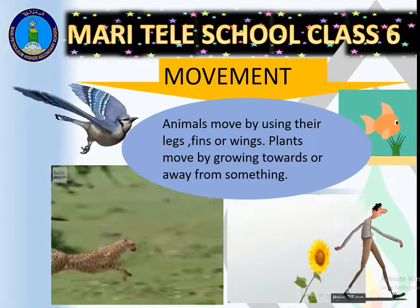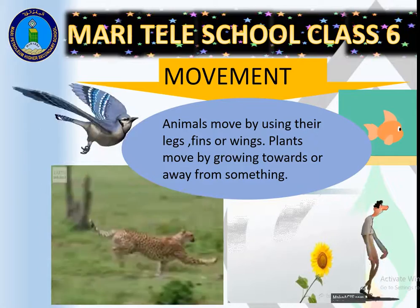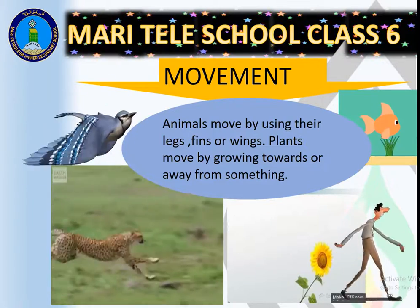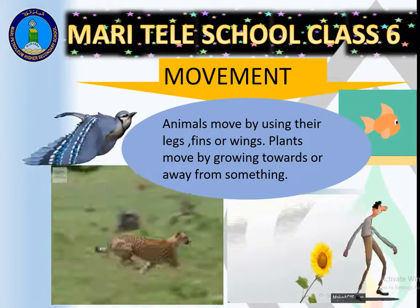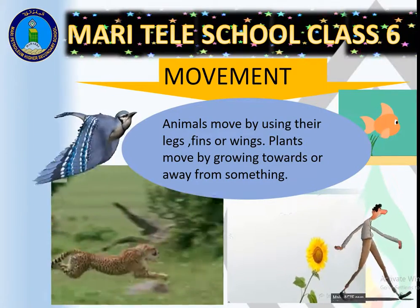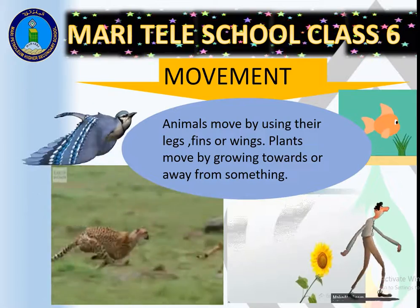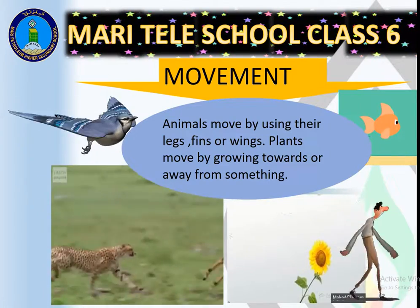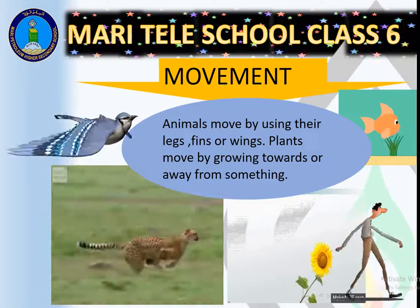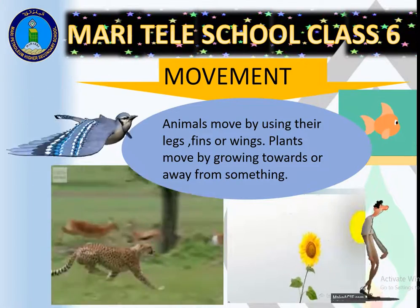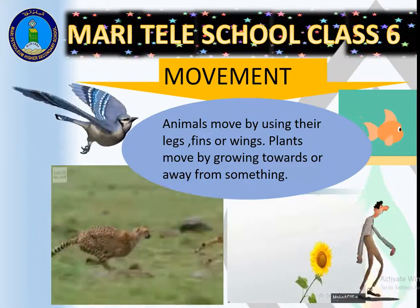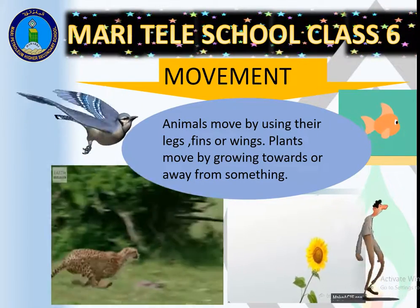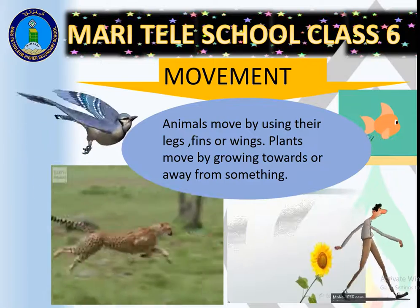For example, roots move towards the soil and away from light, while a stem moves towards the light. Look at this sunflower — it moves according to the movement of the sun's light. Animals move to hunt, to capture prey, and sometimes to escape. For example, a tiger hunting a deer — the deer is running and moving to escape.